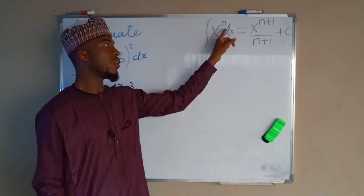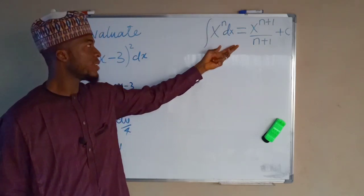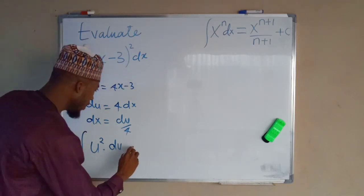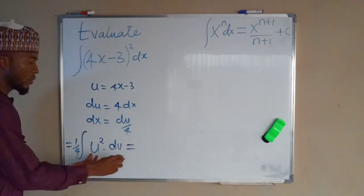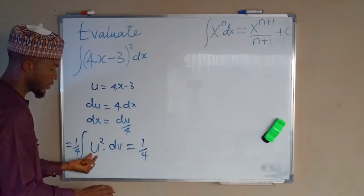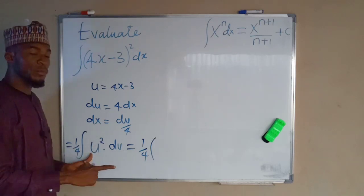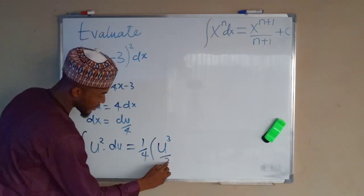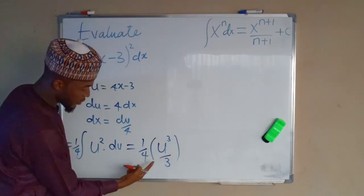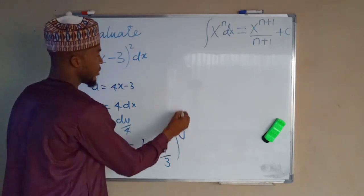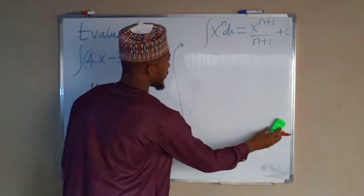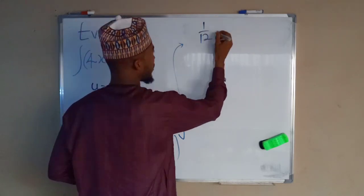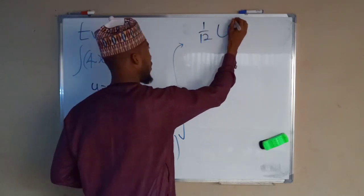This is equal to 1 over 4 times the integral of u squared du. Now applying the principle that the integral of x to the power of n dx equals x to the power of n plus 1 divided by n plus 1, we add 1 to the index — it becomes 3 — so we have u to the power of 3 divided by 3. Combined with the 1 over 4, we get 4 times 3 equals 12.